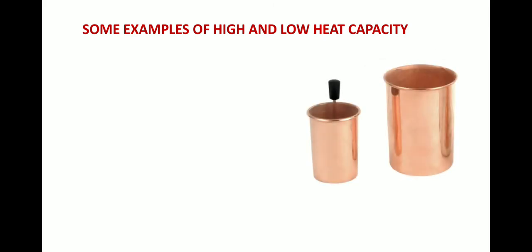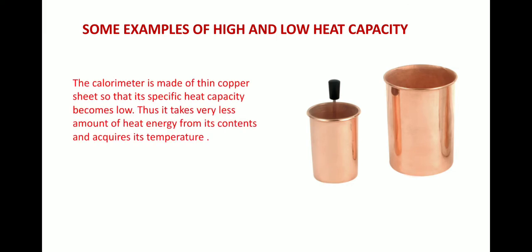This is the picture of a calorimeter. The calorimeter is made up of thin copper sheet so that its specific heat capacity becomes low, because the calorimeter needs to have very low heat capacity so that it takes very little heat energy from its contents and quickly acquires the temperature of its contents. These were the examples of high and low heat capacity. Now I'll show you some numerical problems based on this topic.